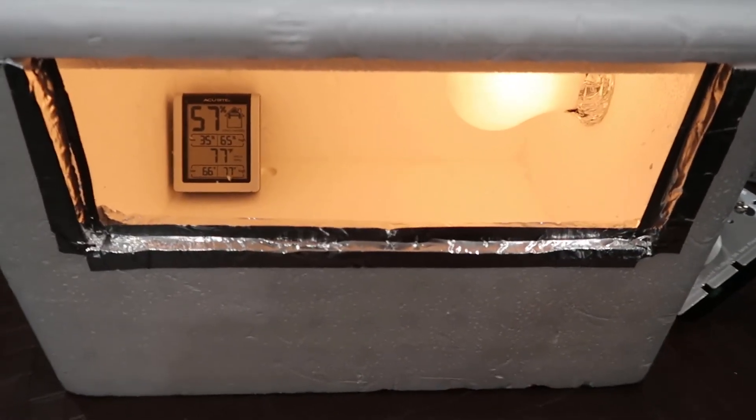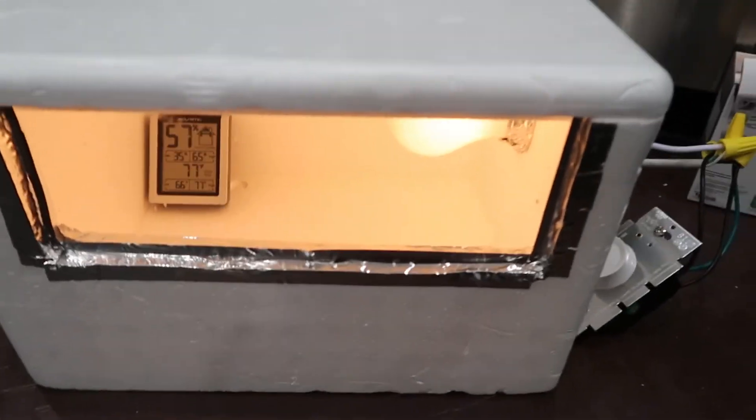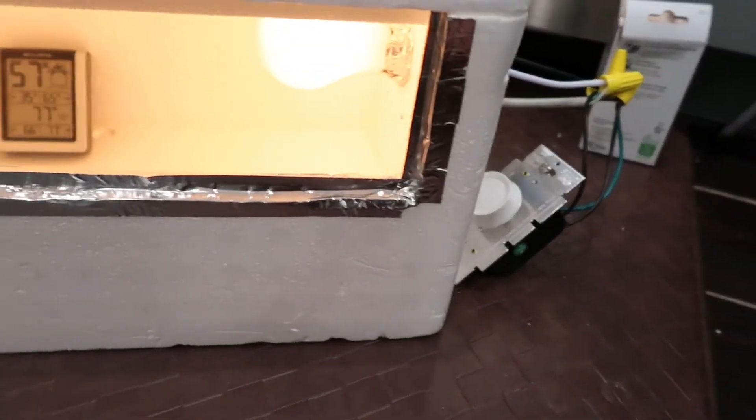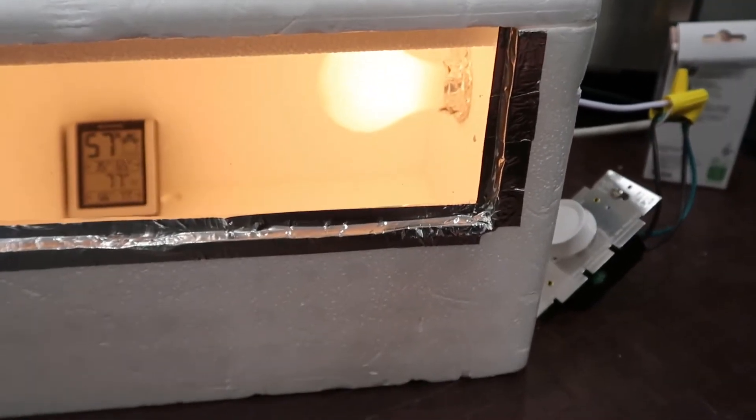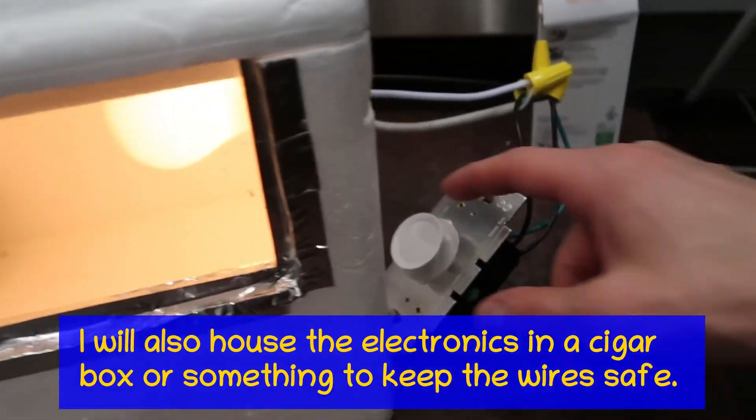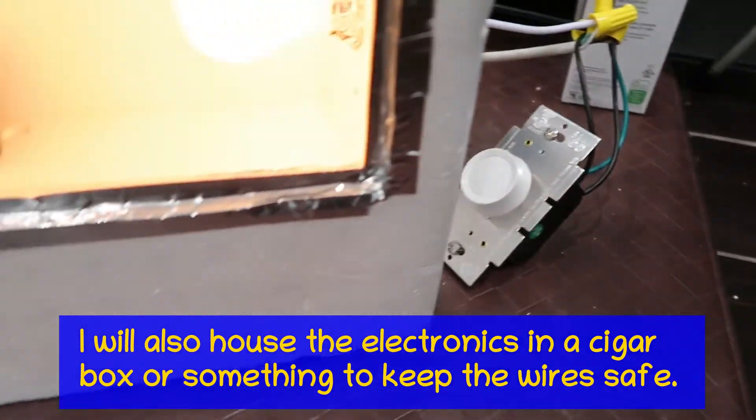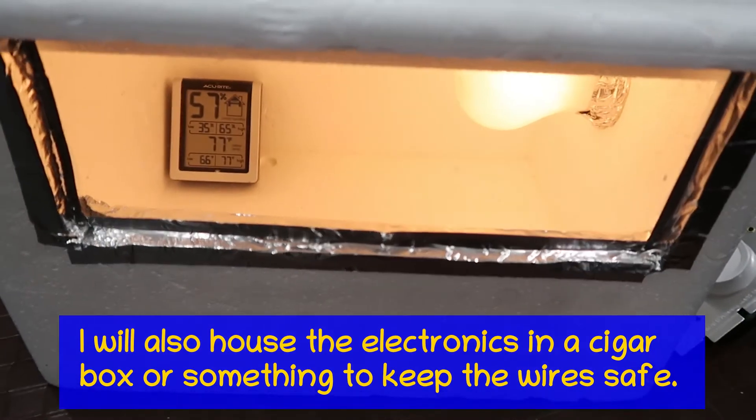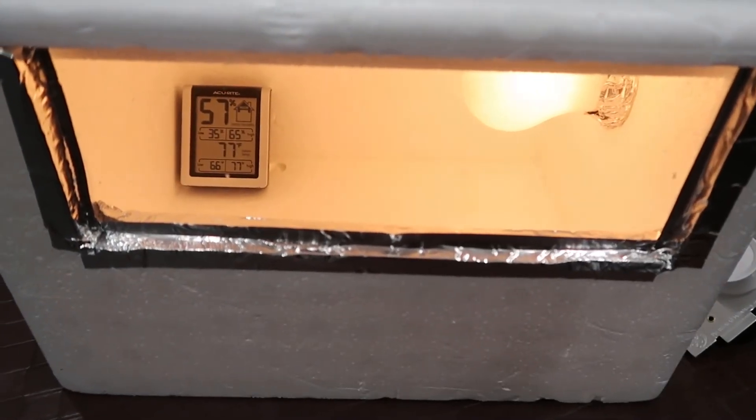Again, no eggs inside, just trying to see how stable the temperature is and determine if this light bulb is too strong or not strong enough or what. It's probably halfway or one third way up on the dimmer, so we'll see where that settles to if it's reasonable or not.